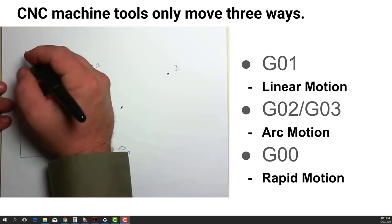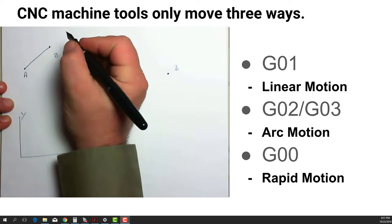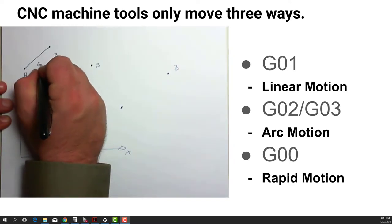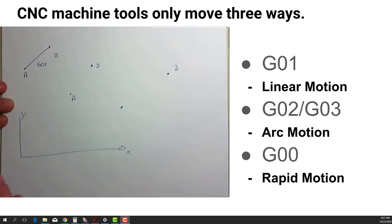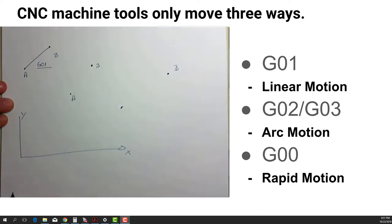You can move from point A to point B in a straight line at a specific speed. You command that with a G01 command and you have to have told the machine how fast you want it to go, either on that line of code or on a previous line of code.